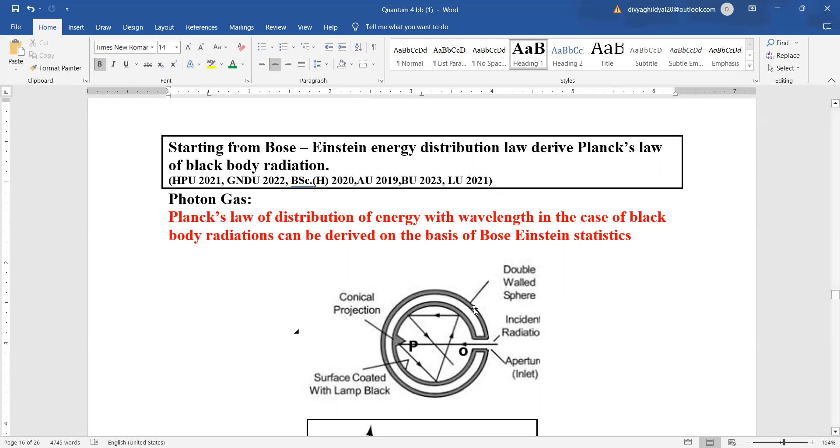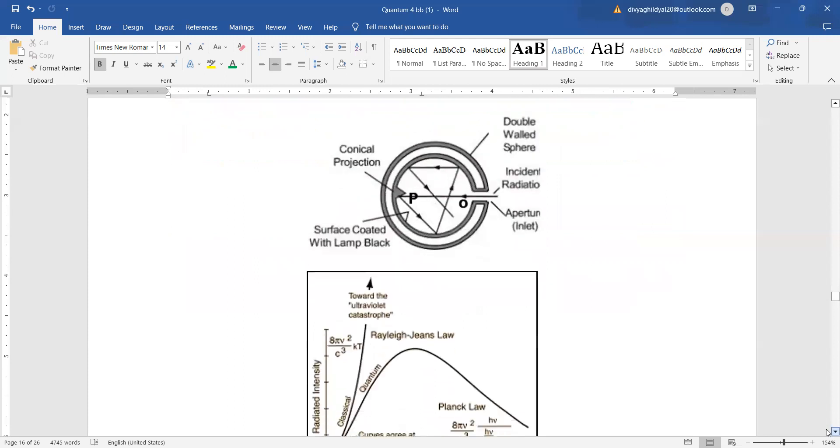Now you remember what we told you regarding black body. This diagram here explains a black body where radiations are getting incident from this opening, getting multiple reflections and refractions with the surface coated with lamp black, and then coming out.